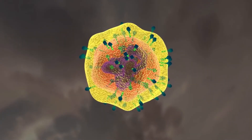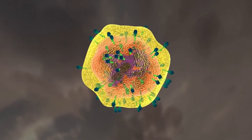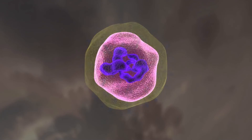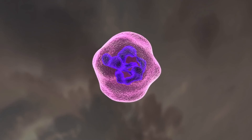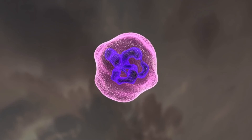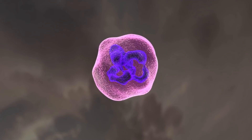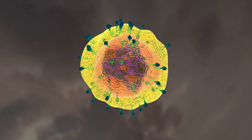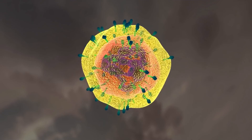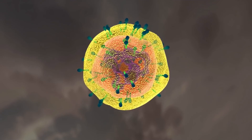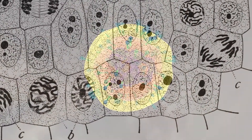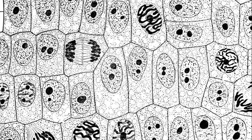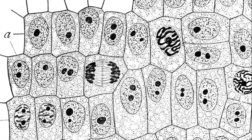Cytoplasm refers to all of the cellular material inside the plasma membrane other than the nucleus. Cytoplasm is made up of a watery substance called cytosol and contains other cell structures such as ribosomes. Ribosomes are structures in the cytoplasm where proteins are made. DNA is a nucleic acid found in cells. It contains the genetic instructions that cells need to make proteins. These parts are common to all cells from organisms as different as bacteria and human beings. The similarities show that all life on Earth has a common evolutionary history.